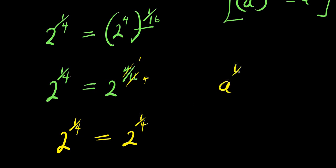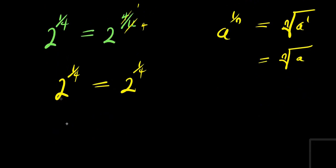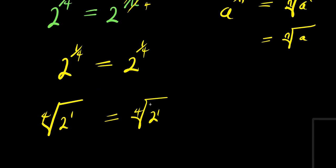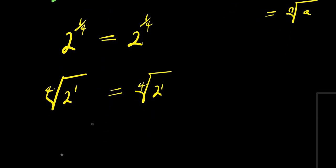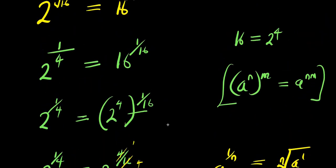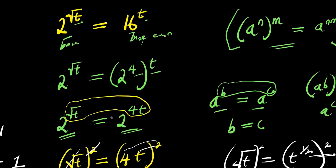We now have 2^(1/4) = 2^(1/4). Using the identity a^(1/n) = the nth root of a, this is the fourth root of 2 equals the fourth root of 2 — the left side equals the right side. Both solutions are verified correct. Thank you and goodbye.